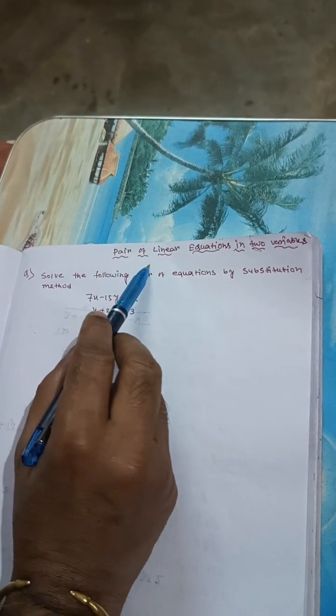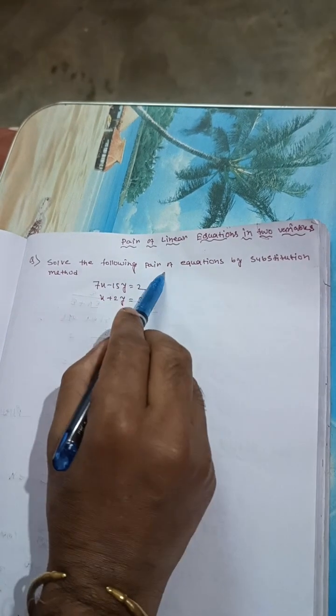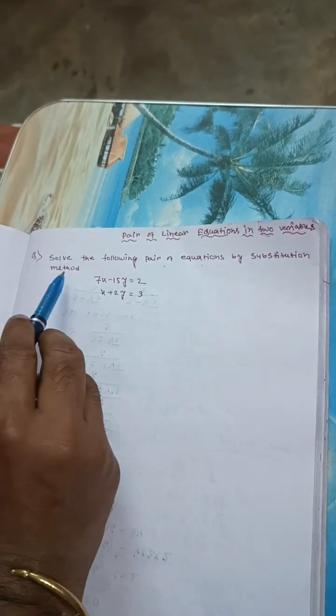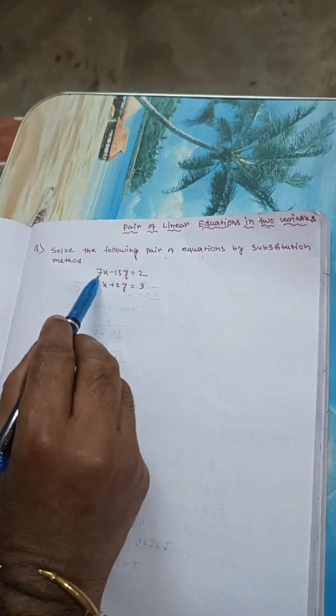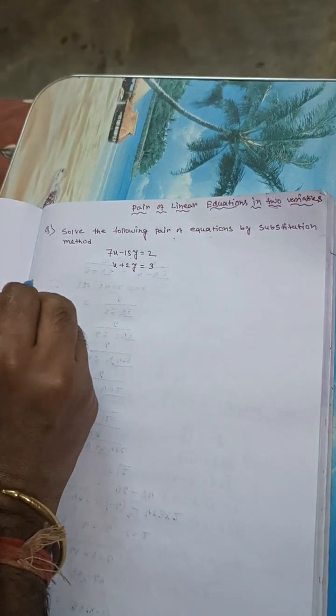This question is related to pair of linear equations in two variables. The question is: solve the following pair of equations by substitution method. The equations are 7x minus 15y equals 2, and x plus 2y equals 3.